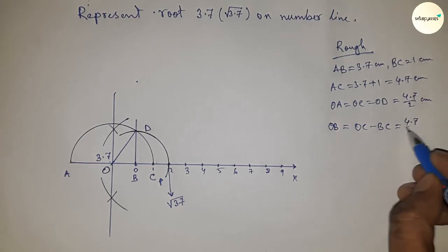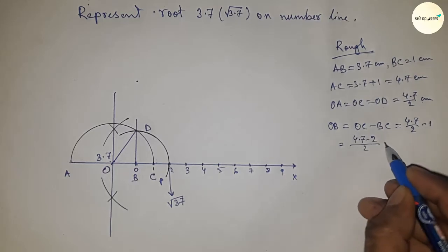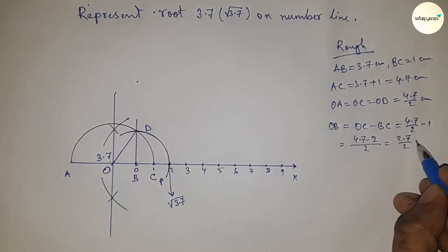So putting the value of OC and BC, and after calculating this, so this is 2 minus 2.7 by 2 centimeter.